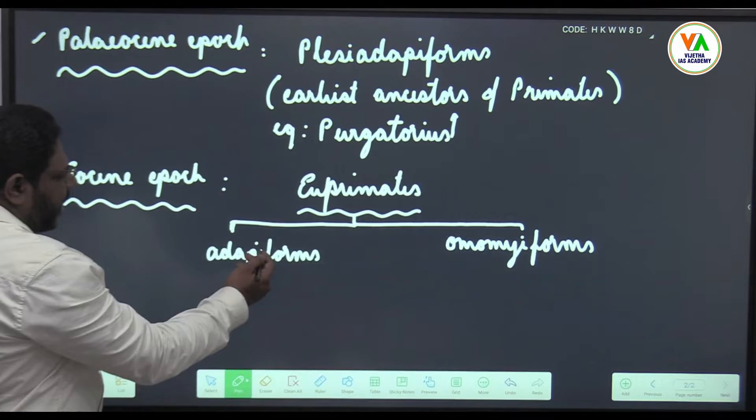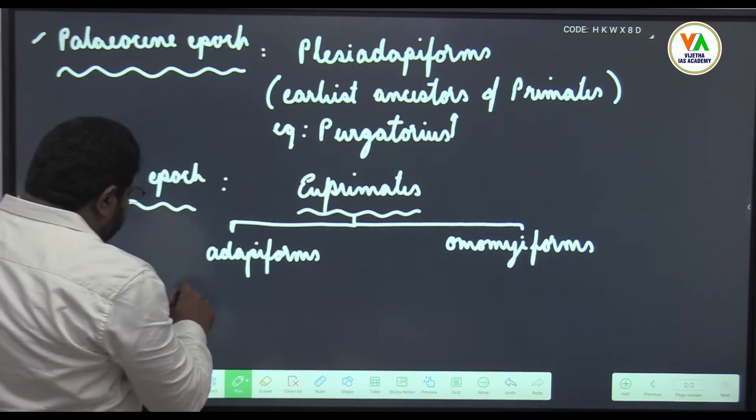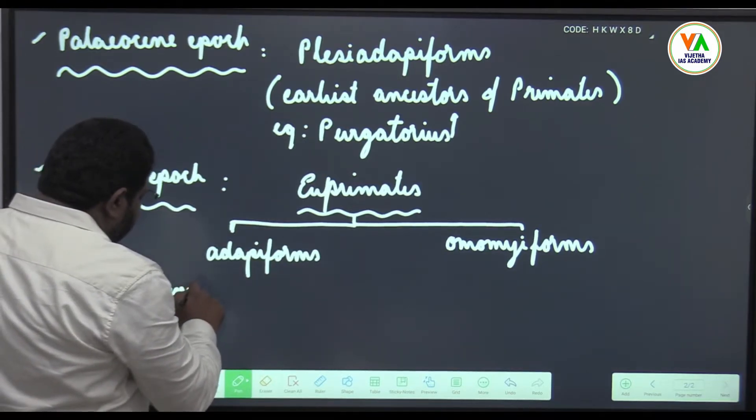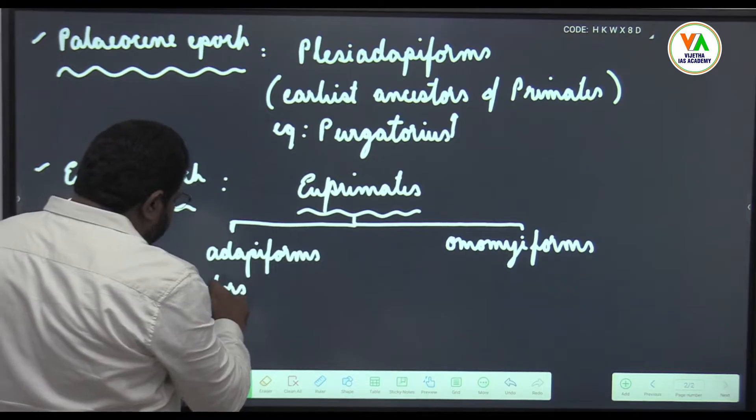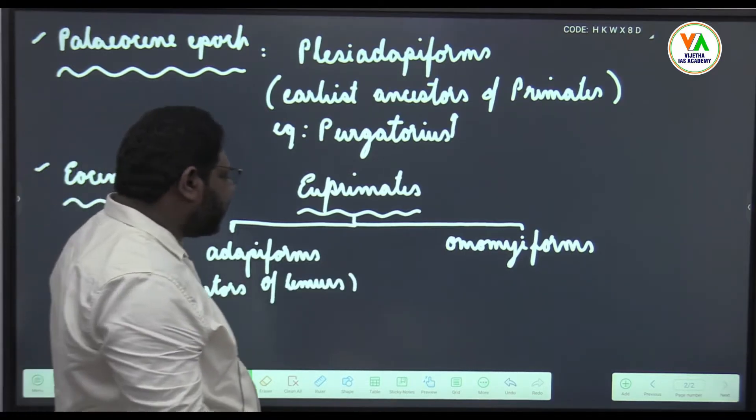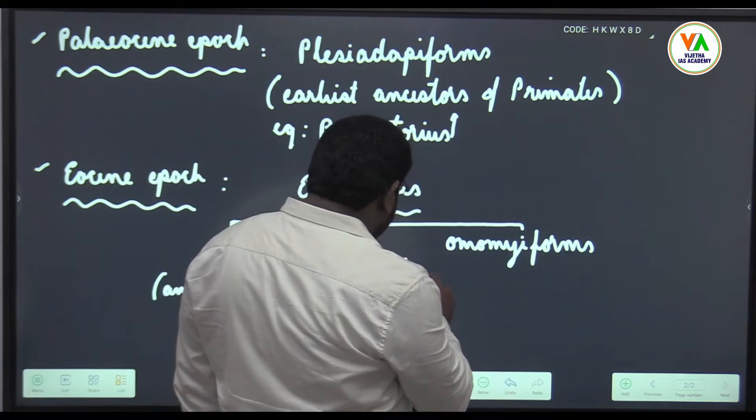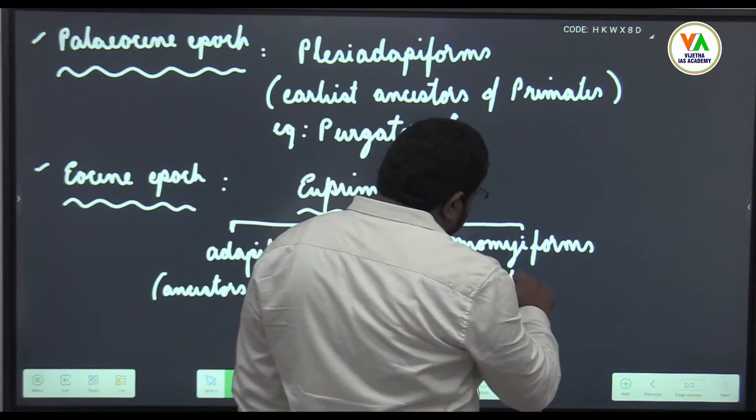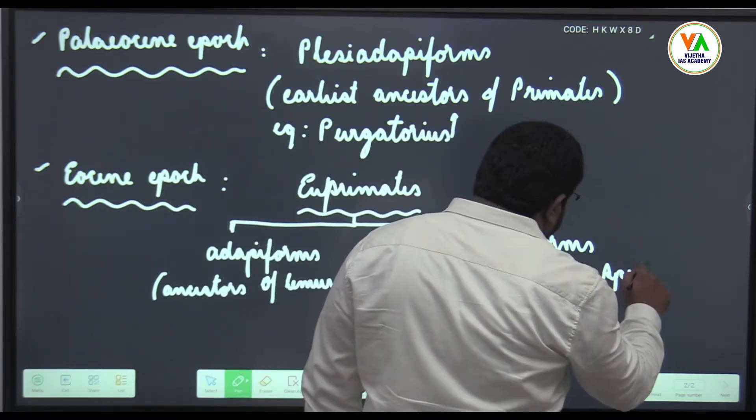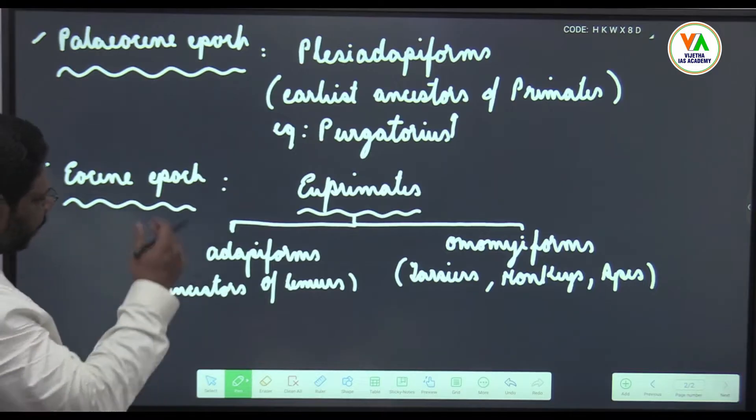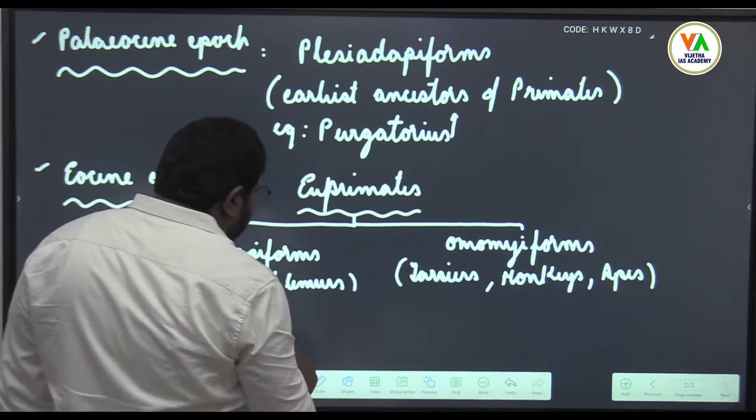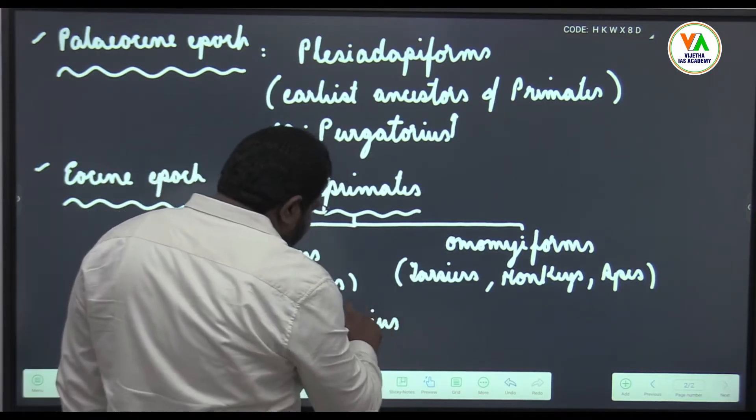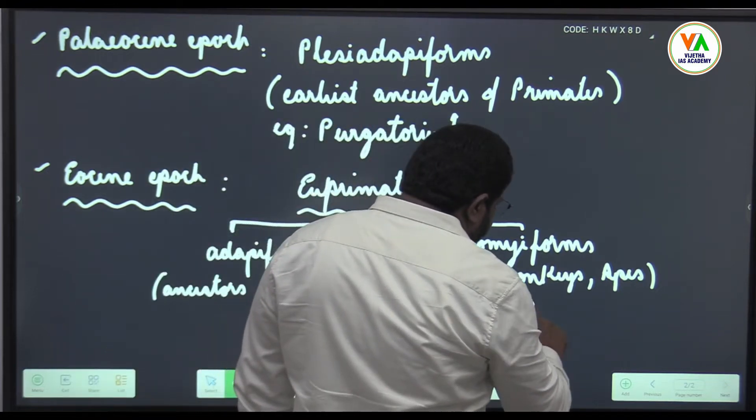These Adapiforms are somewhat considered to be ancestors of Lemurs. These Omomiforms are considered to be the ancestors of Tarsiers and some monkeys and apes. An example of this U-primate is Darwinus mesillae which is also known as Ida.